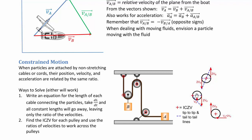A pulley in fixed-axis rotation that isn't translating simply changes the direction of velocities. Starting with velocity of B going downward, you trace through: the rope doesn't stretch, so the far side also moves at VB, the pulley changes its direction, and working around the ICZV at the bottom, we end up with the ratio of two to one.